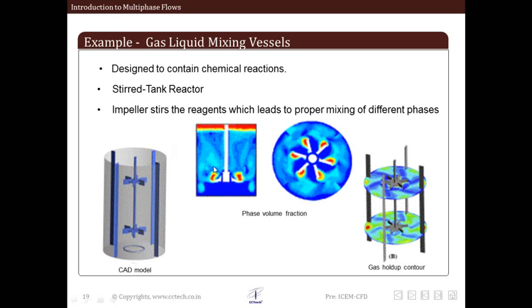This is a stirred tank reactor, and the impellers stir the reactions which leads to proper mixing of different phases. Most of the time it consists of two or more phases. These are the phase contours from a CFD model.